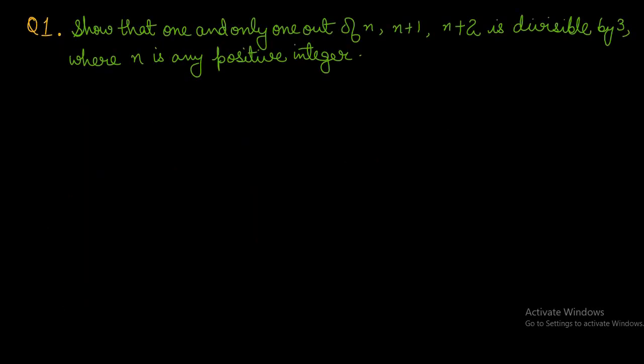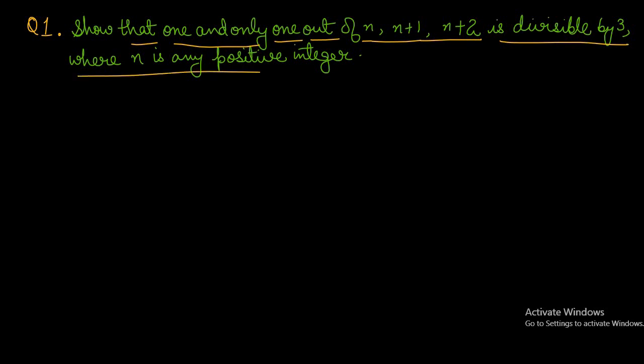In this video, it was a very important question that came in 2015: show that 1 and only 1 out of n, n plus 1, and n plus 2 is divisible by 3, where n is any positive integer. We have three numbers — n, n plus 1, and n plus 2 — and we have to show that at one time, one number is divisible by 3.